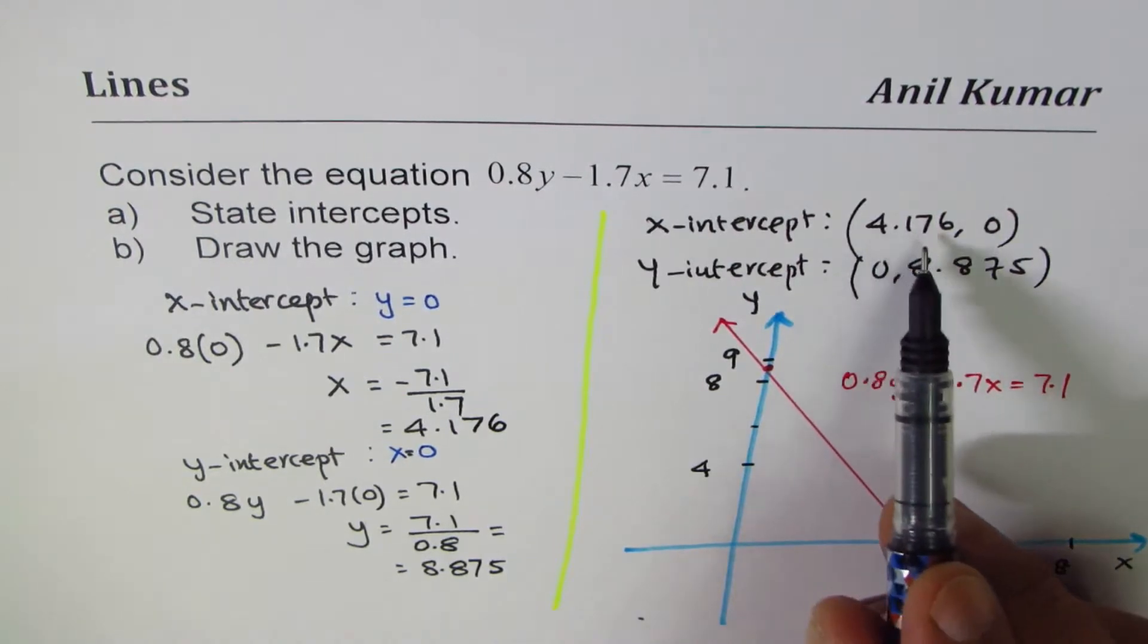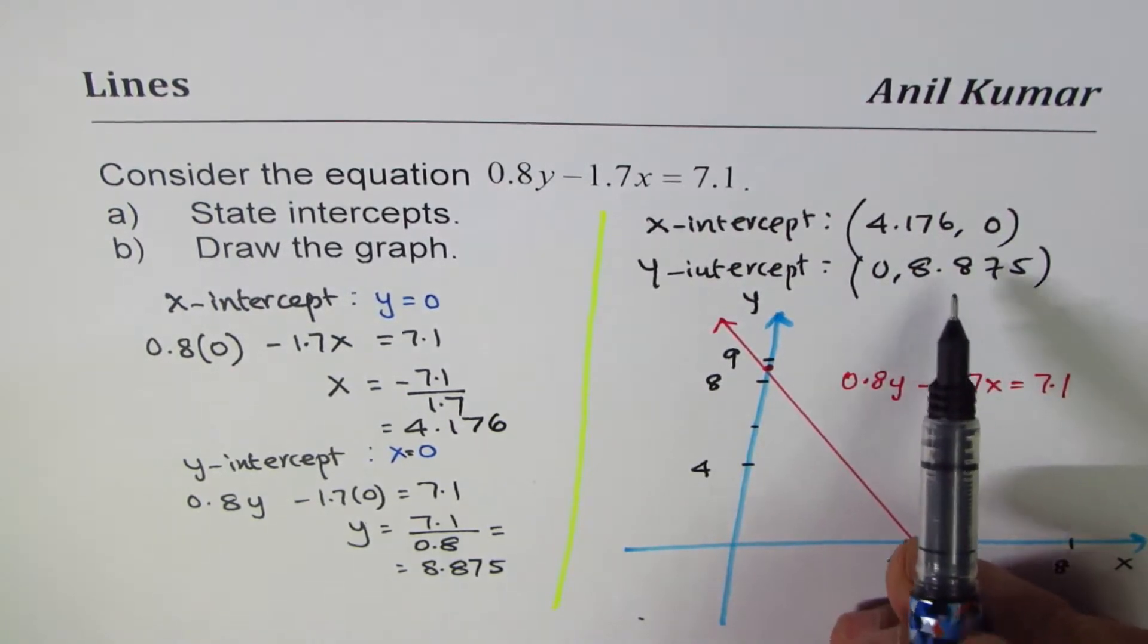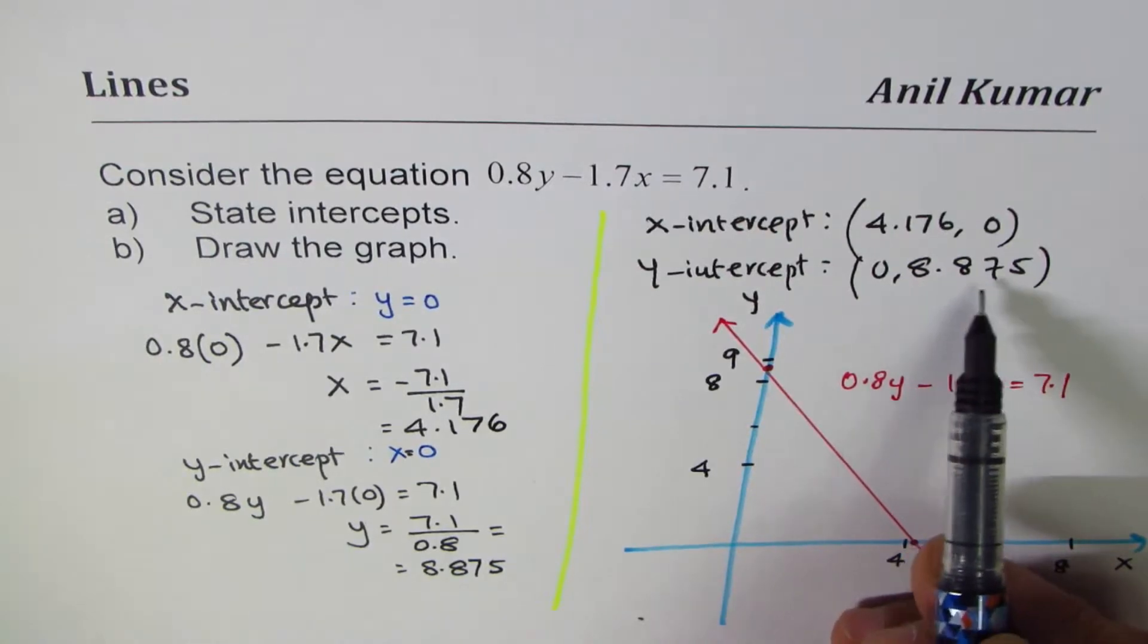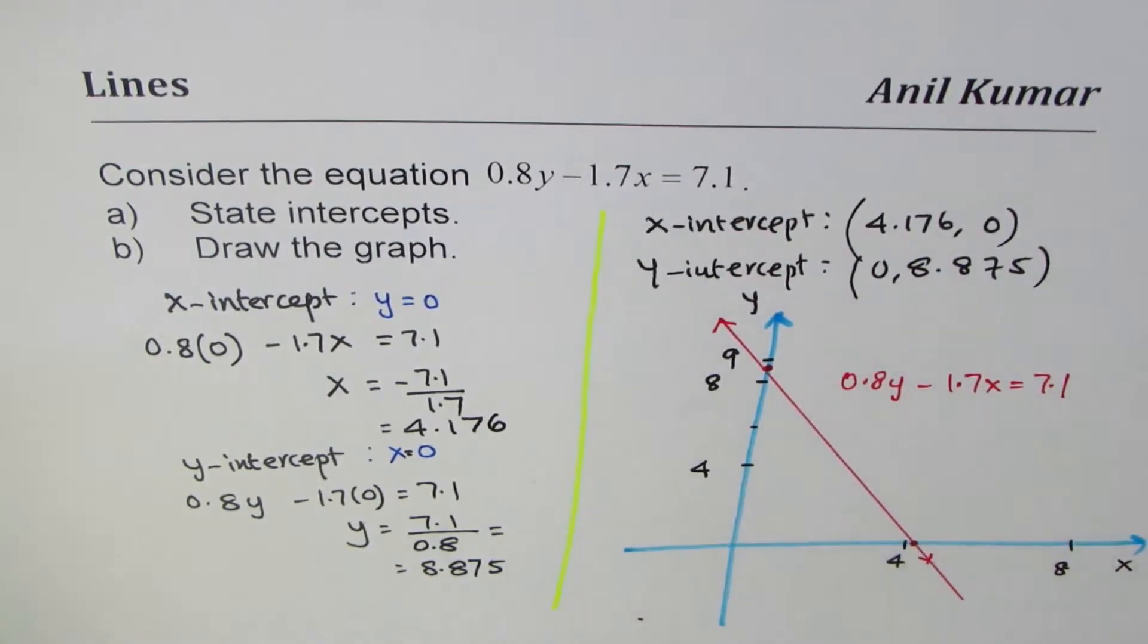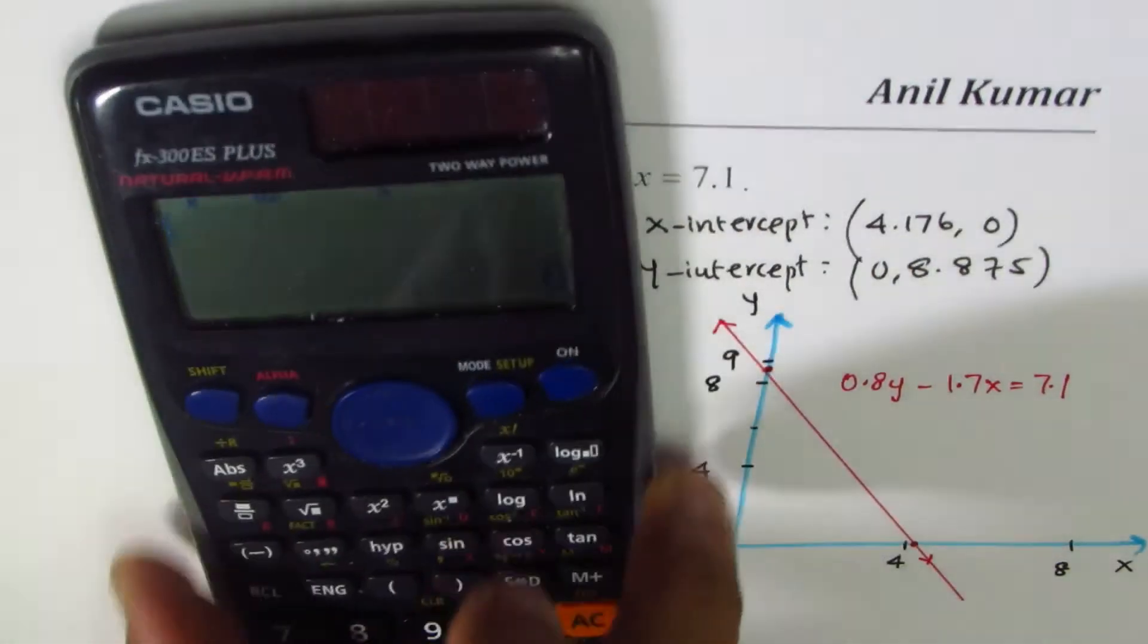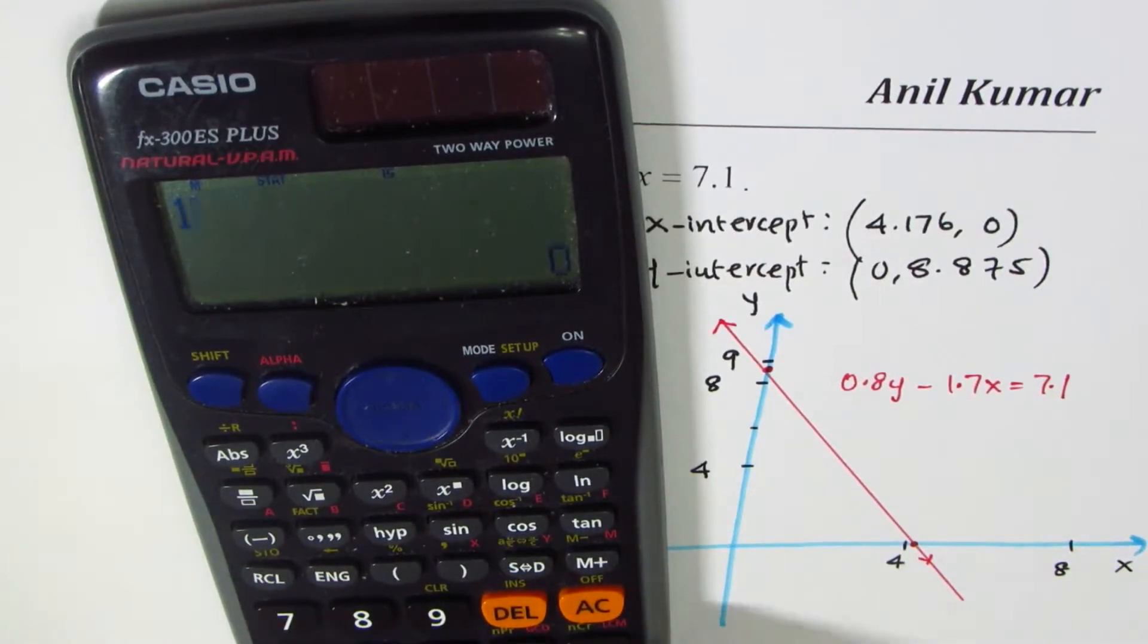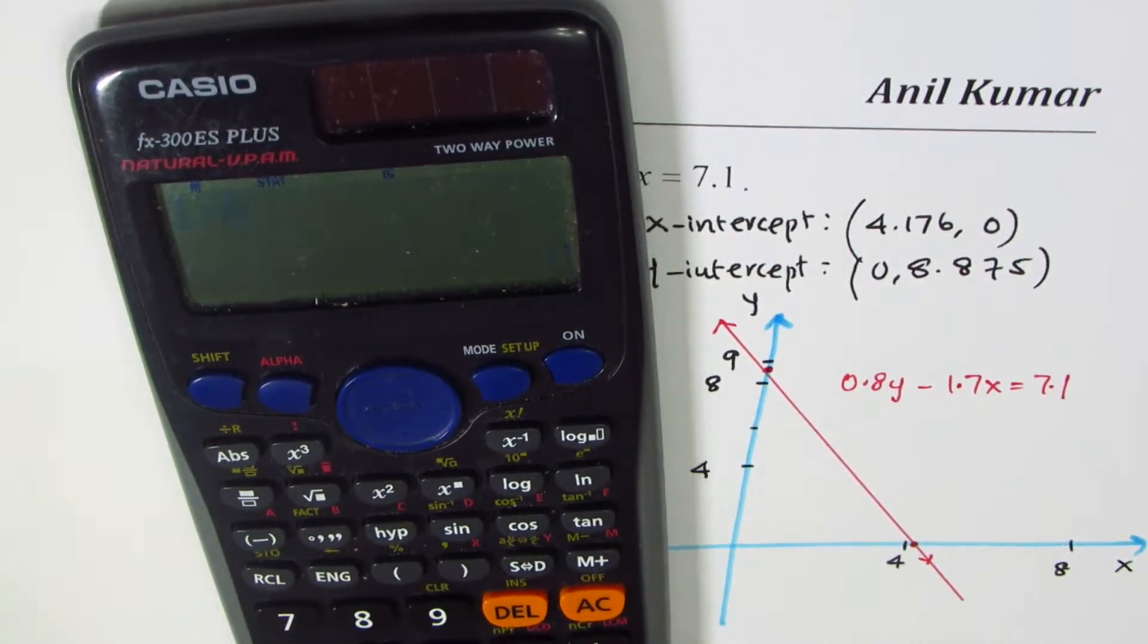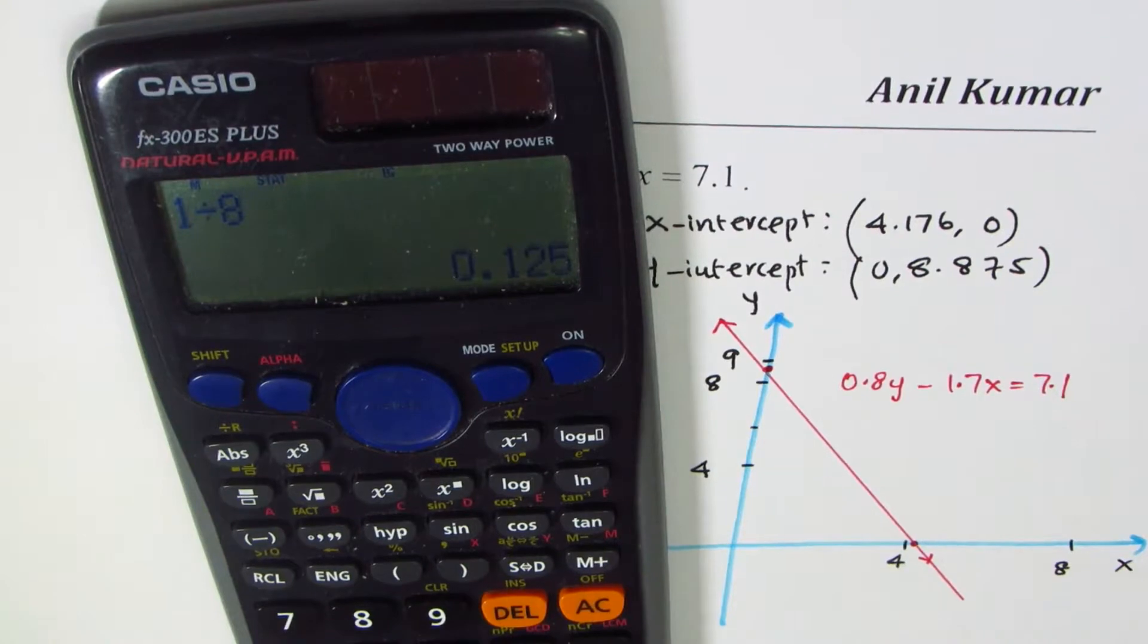Kind of 1.25, kind of thing. So since this is 8.75, do you see that? So let me show you. If I do 1 divided by 8, I get 0.125. Do you see that?